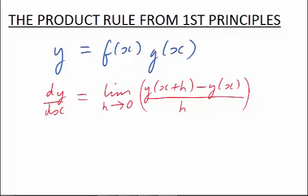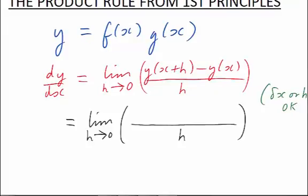Sometimes h is replaced with the symbol delta x, but the definition is the same. Let's now immediately substitute the special form for y, f of x times g of x, into this limit. The limit notation and also the denominator will remain unchanged. It's the top where the substitution will happen.